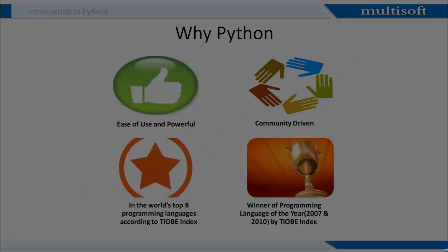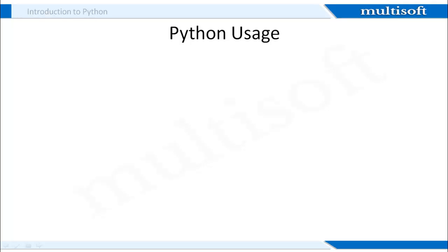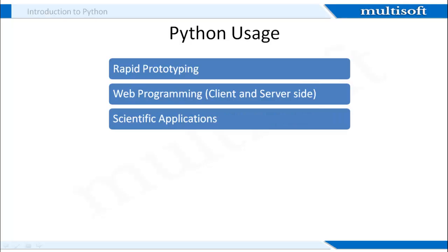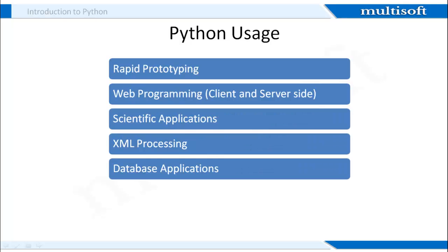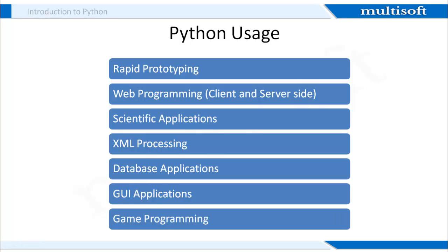Moving on to where Python is useful — this programming language can be applied in several domains and helps users to develop applications for a variety of uses. Developers are able to use this for rapid prototyping, web programming, scientific applications, XML processing, database applications, GUI applications, game programming, and more.